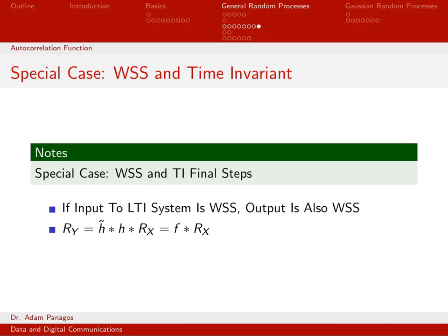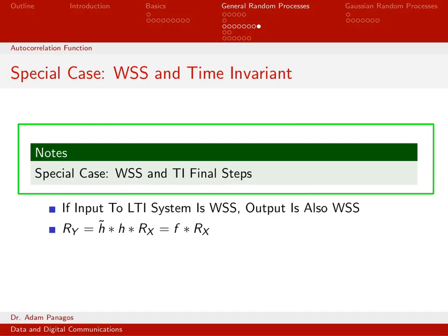We've been working on deriving a relationship that relates the output autocorrelation function of a linear system to the input autocorrelation function associated with the random process x(t). We did the special case of a wide-sense stationary random process only and the special case of a time-invariant system only. We've put both these constraints together simultaneously, and we're ready to do this final step to get the input-output relationship we want.